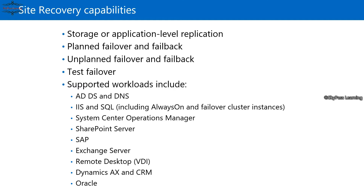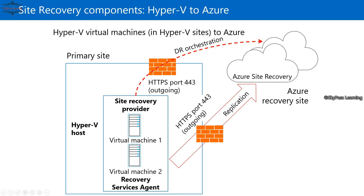This is Scenario 1: Hyper-V to Azure. The required port is 443. This covers DR orchestration and replication. The replication network can be the same or different, but it's always recommended to keep the replication network independent from your normal connectivity network to avoid conflicts in network traffic and prevent high utilization.